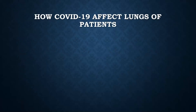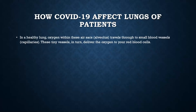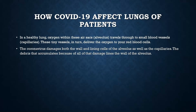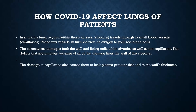This slide is very important for healthcare professionals, and most important for the physiotherapist or respiratory therapist specializing in cardiopulmonary rehabilitation. You should know how COVID-19 affects the lungs, because if you are giving chest physiotherapy, you need to know which part or lobe of the lung is affected. In a healthy lung, oxygen within the air sacs — the alveoli — travels through to small blood vessel capillaries, which deliver oxygen to red blood cells. The coronavirus damages both the wall and lining cells of the alveolus as well as the capillaries. The debris that accumulates lines the walls of the alveolus, and damage to the capillaries causes them to leak plasma proteins that add to the wall thickness.